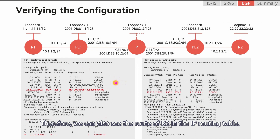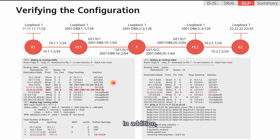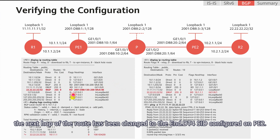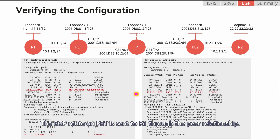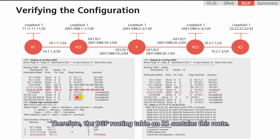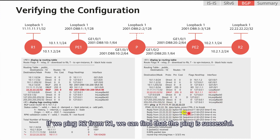The preferred BGP route enters the IP routing table, so we can also see the route of R2 in the IP routing table. The route has successfully recursed to an SRv6BE path, and the next-hop has been changed to the End.DT4 seed configured on PE2. The BGP route on PE1 is sent to R1 through the peer relationship, so the BGP and IP routing tables on R1 contain this route. If we ping R2 from R1, the ping is successful, indicating that the configuration is correct.